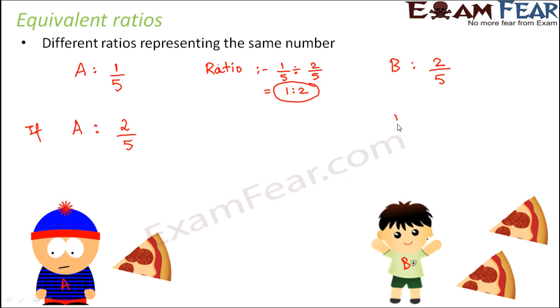And if B would have eaten four slices of pizza out of five slices of pizza, in this case, what would be the ratio?